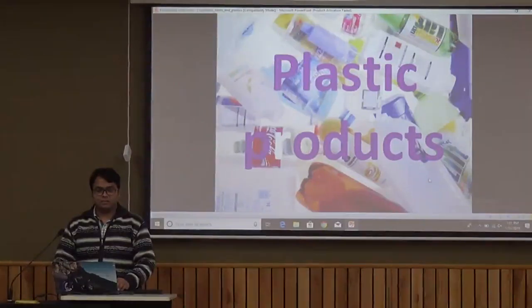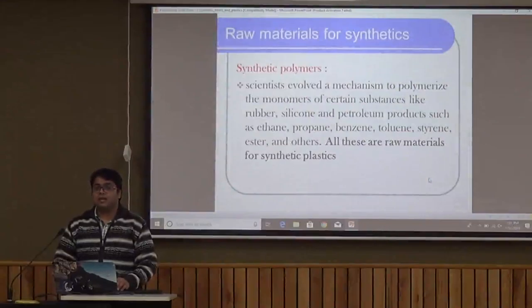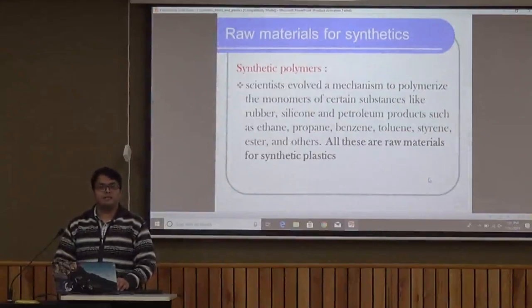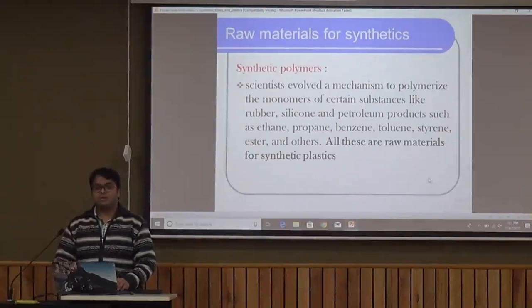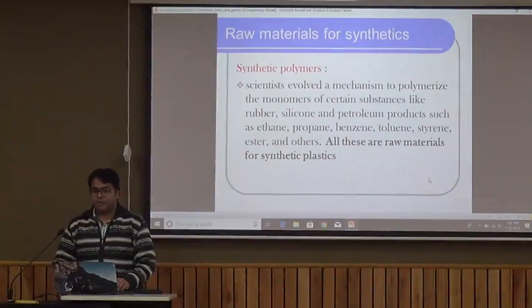The products obtained from plastic — synthetic polymers are obtained from certain raw materials which we call petrochemicals. These are chemicals obtained from petroleum oil. These petrochemicals are chemically processed and treated in factories to obtain plastics. Raw materials used include rubber, silicone, ethane, propane, benzene, toluene, etc., which act as raw materials to make plastics.